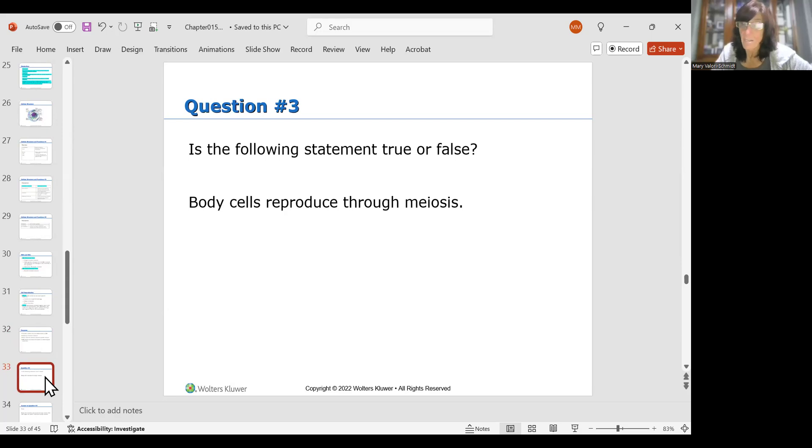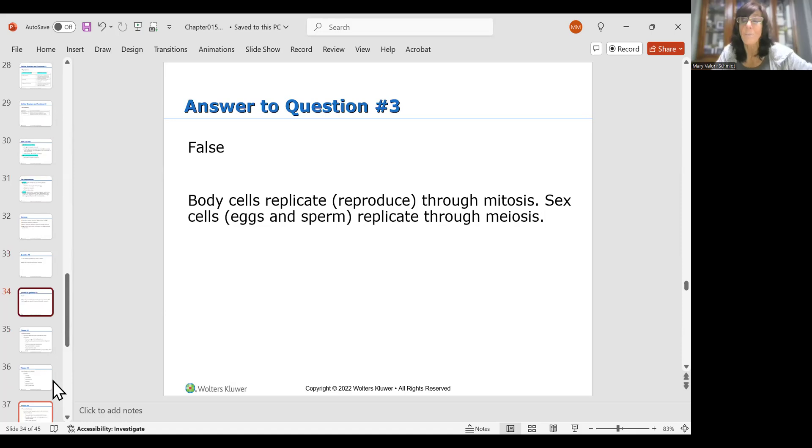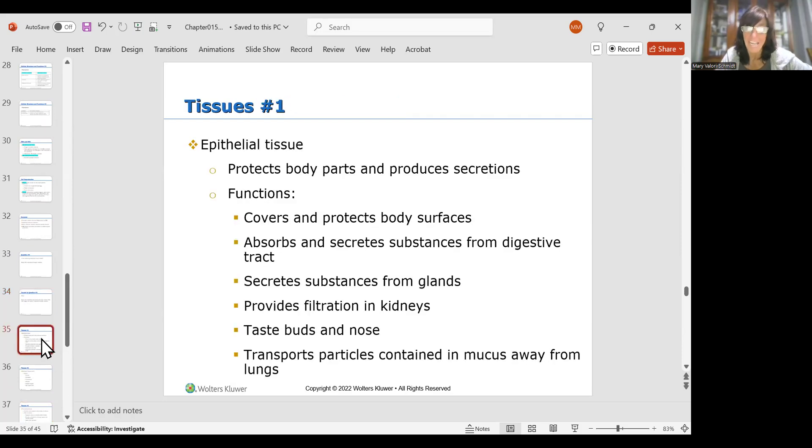So is the following statement true or false: Do body cells reproduce through meiosis? No, they reproduce through mitosis. That's how body cells reproduce. Cells when they go through mitosis, they make two. It's just like there's one of me and now boom, now there's two of me, your worst nightmare. No, I'm kidding. That's how they replicate or reproduce themselves.